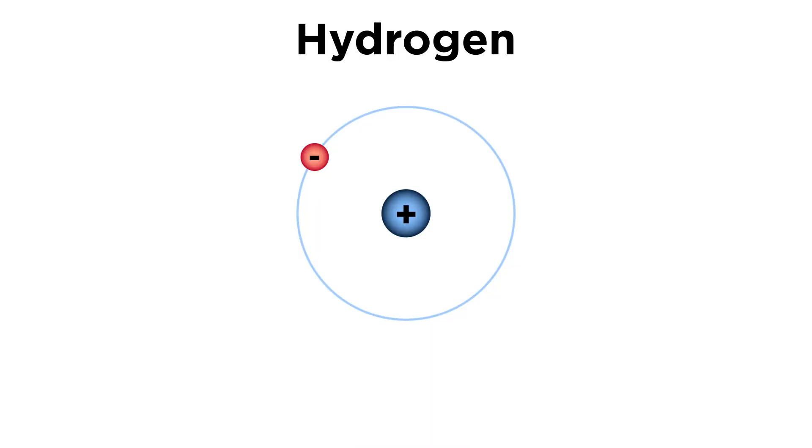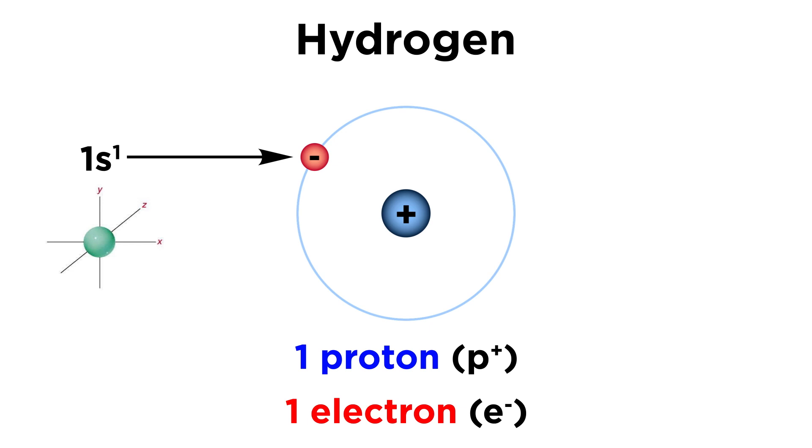Hydrogen is the smallest and simplest of all the elements. It houses a single proton in its nucleus, and therefore, when neutral, possesses only one electron. In this ground state, its electron configuration is 1s1, meaning its lone electron resides in the 1s orbital, which is a spherical orbital.